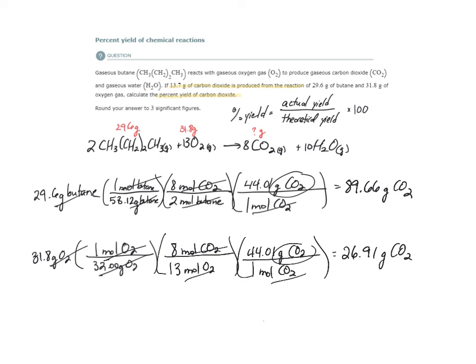So here I can clearly see that oxygen is my limiting reactant. And so, therefore, because oxygen is my limiting reactant, I will only make 26.9 grams of CO2 before the reaction stops. So this is my theoretical yield for CO2.